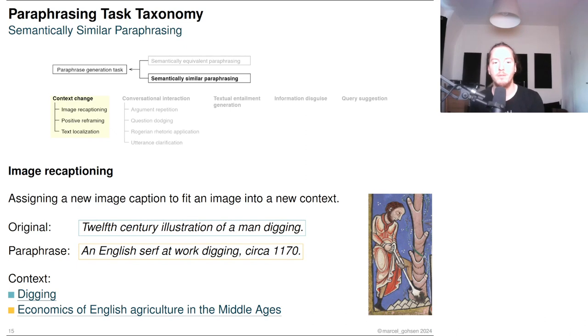Next, I'll talk about paraphrasing tasks that yield semantically similar paraphrases. According to one of our earlier papers, image recaptioning is a paraphrasing task too. Image recaptioning means to assign a new image caption to fit it into a new context. In this example, we see two image captions for the image on the right from two different Wikipedia articles that are paraphrases of each other.